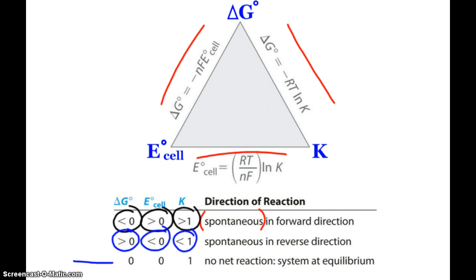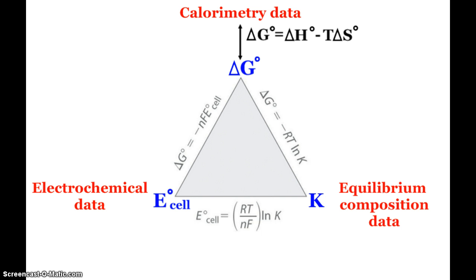We'll be looking at this more in the future, but when we do reach equilibrium, delta G is zero, our E of our cell is zero, and K is one. In that last picture, I just added more information. We can still connect delta G to our calorimetry data as well, our enthalpy and entropy stuff. So that's just a nice summation, tie-in, focusing on delta G and how much information we can get out of it.